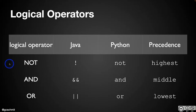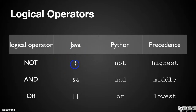These are the three operators we're going to focus on. Even though there's only three, we can combine them in very powerful ways. In this table, I've summarized their names — NOT, AND, and OR. I've shown you what symbol we use in Java, and also what symbol we use in Python, because you may be more familiar with that. And I've shared their precedence.